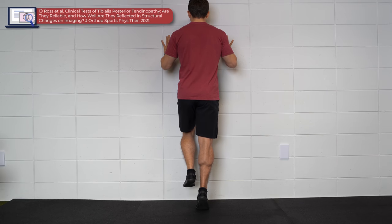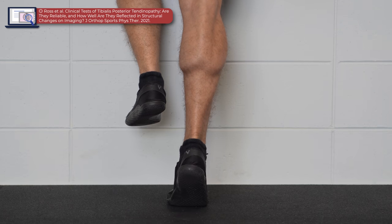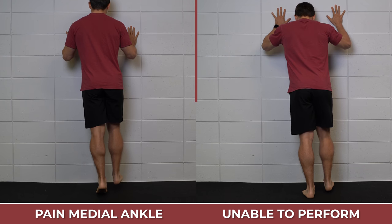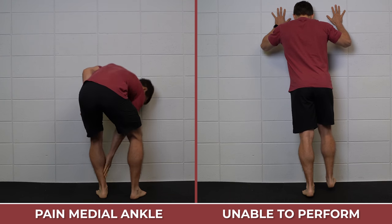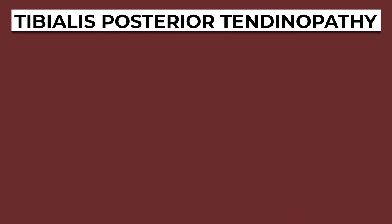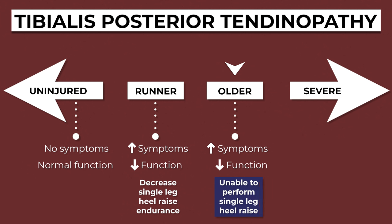According to Ross 2021, the most reliable test for diagnosing tibialis posterior tendinopathy is a single leg heel raise. A person would either report pain along their medial ankle and/or foot, or be unable to perform a single repetition. The young, healthy runner would likely have pain and decreased endurance but would still be able to perform a single leg heel raise. On the other hand, the older, sedentary individual might not be able to perform one because of that loss in function.